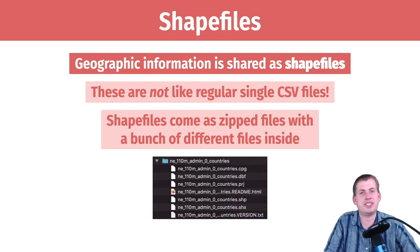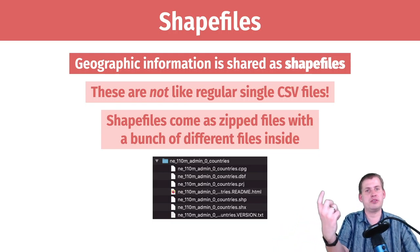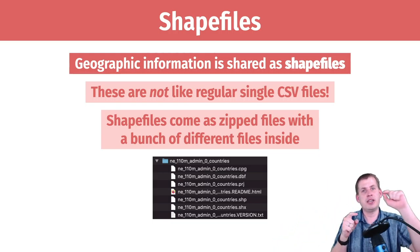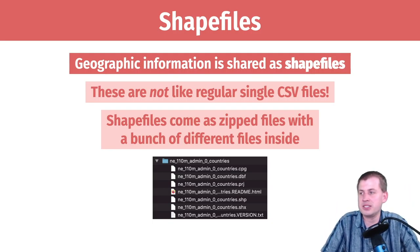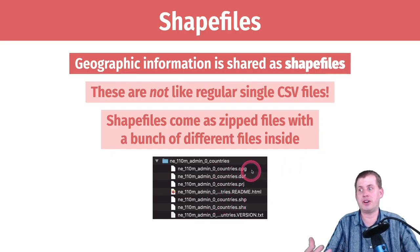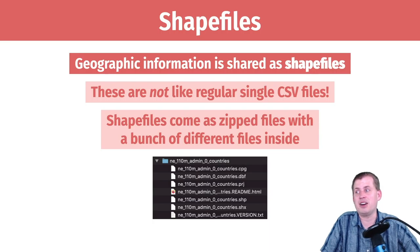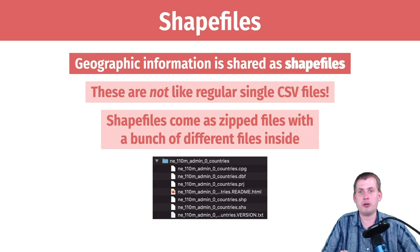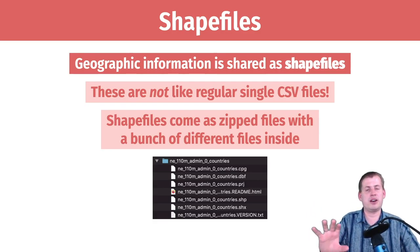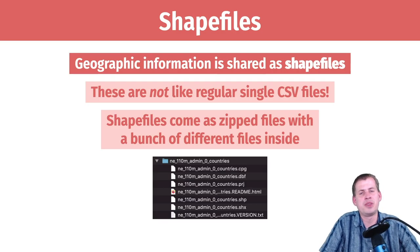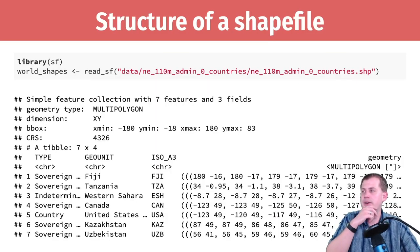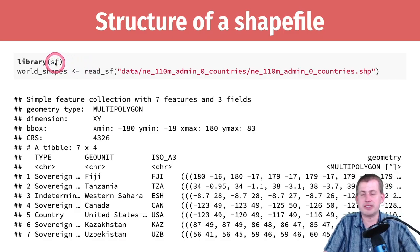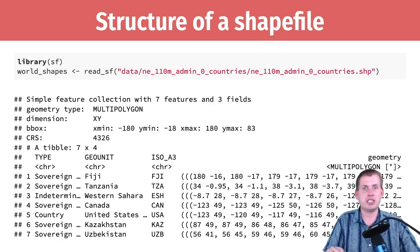All the other files — the PRJ, the DBF, the SHP, the SHX — are all elements of geographic data that tell you where the different points are. If you have the boundaries of a country, they tell you all of the different contours of those boundaries. All of that lives in the compilation of all these different files. You technically need all of them, so when you download a shape file it's really a whole bunch of files, and when you load it into R it will load all of the different pieces it needs.